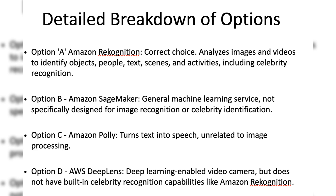Option C, Amazon Polly, is a service that turns text into lifelike speech. It is completely unrelated to image processing or celebrity recognition.